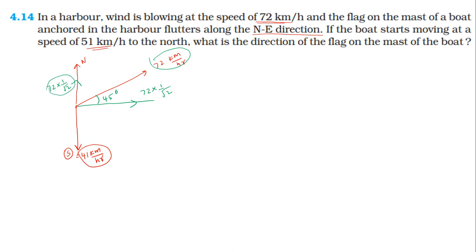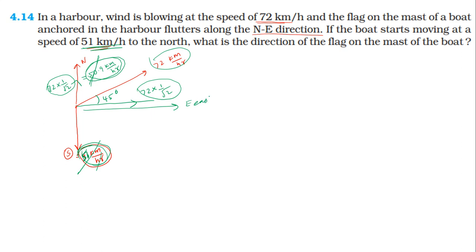The north component of the wind velocity in the northeast direction is approximately 50.9 km per hour in the south direction, while the speed of the boat is 51 km per hour north. These are almost equal and cancel each other out. The remaining resultant velocity is in the east direction, so the flag on the mast flutters in the east direction.